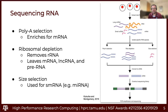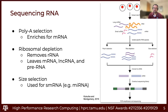PolyA selection enriches for mostly mRNA — you'll get some long non-coding RNA in my experience, but not a lot. To get the full range of different RNAs, you'd want to use ribosomal depletion, which removes ribosomal RNA that can swamp out your libraries, leaving behind mRNA, long non-coding RNA, and all the pre-RNA. Lastly, you can use size selection to get libraries for small RNAs like microRNAs or piRNAs. The pipelines for that are considerably different.